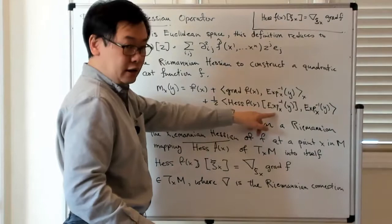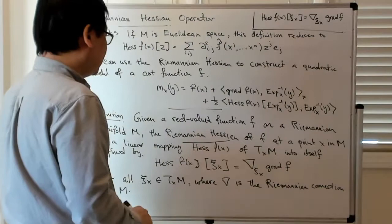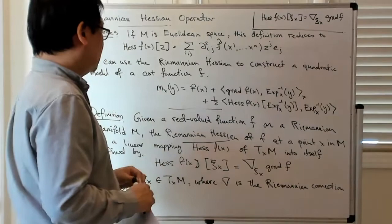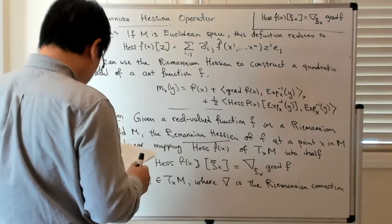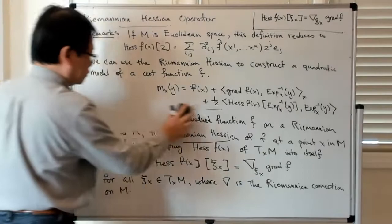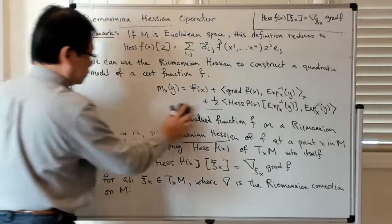So this thing which is the obvious analog of essentially just the Taylor expansion of the function, the multivariate Taylor expansion, this is going to give you a quadratic model of the function f around x. So that's a useful thing to know. All right, so let me just stop here for now.